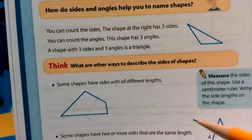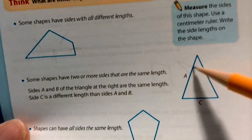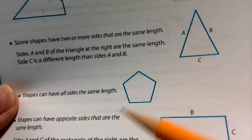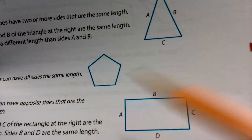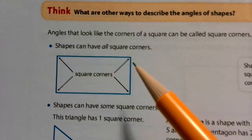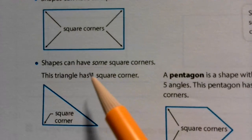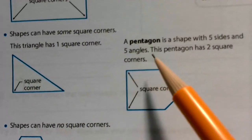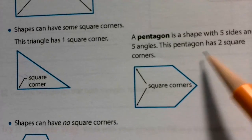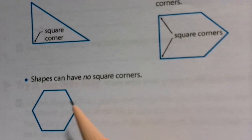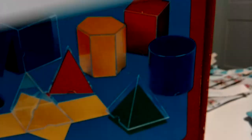Some shapes have two or more sides that are the same length — if you look, A and B are the same length but C is different. Shapes can also have all sides the same length, like a pentagon with five sides. Shapes can have opposite sides of the same length, like we talked about with the rectangle. Shapes can have all square corners, some square corners — this triangle has only one — or no square corners at all, like a hexagon.